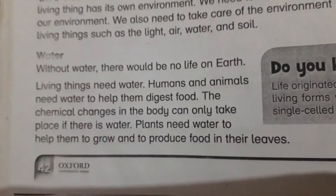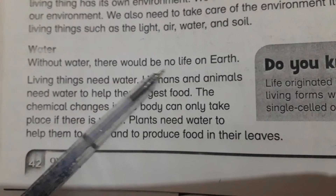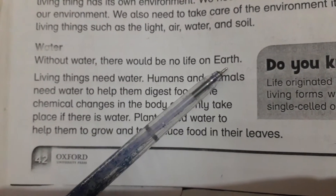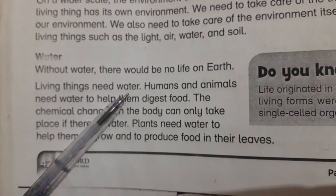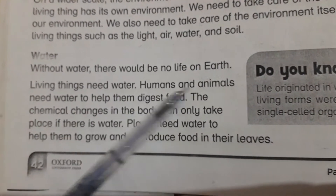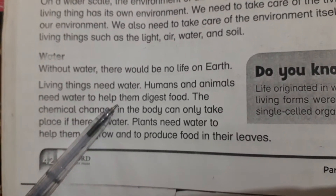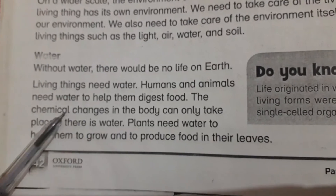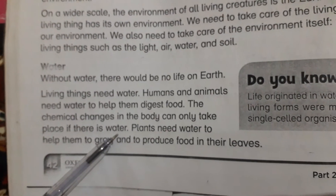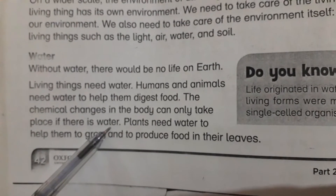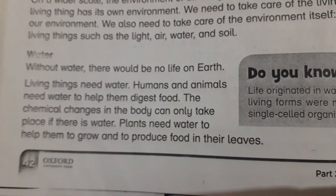First of all, let's talk about water. Without water, there would be no life on earth — if there is no water, then life is not possible. Living things need water. Humans and animals need water to help them digest food. The chemical changes in the body can only take place if there is water — food digestion and other chemical changes in the body are only possible if water is present.